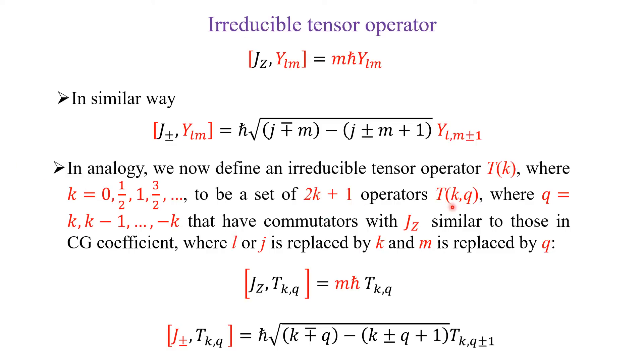So, T is a function of k and q. K is the rank of the tensor. Q is the component, where q is equal to k, k minus 1, and it will go up to minus k. That is, it simply runs from k to minus k.